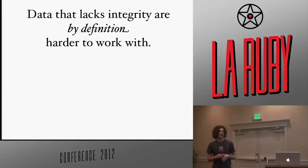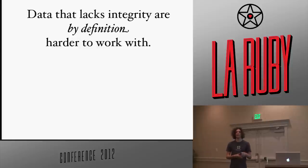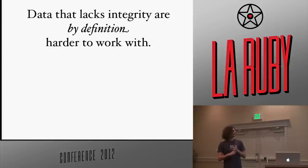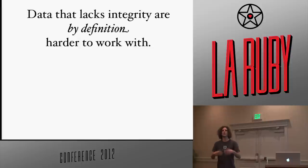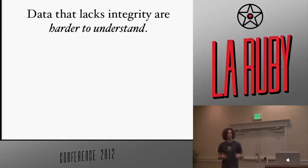Let's start with data integrity. There are obvious data integrity problems — corrupt data, missing data — that are fairly uncontroversial. What I'm interested in are two other aspects: first, data that lacks integrity requires more code to deal with it — extra nil checks, extra sanity checks, increased complexity. Second, data that lacks integrity is harder to understand. If you come across data that lacks integrity, it just doesn't make sense, and you spend time figuring out how it works rather than being productive. A lack of data integrity kills sustainable productivity.